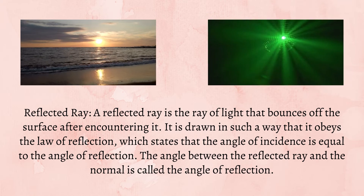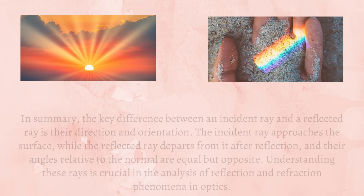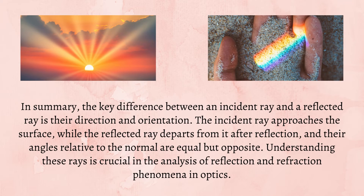In summary, the key difference between an incident ray and a reflected ray is their direction and orientation. The incident ray approaches the surface, while the reflected ray departs from it after reflection, and their angles relative to the normal are equal but opposite. Understanding these rays is crucial in the analysis of reflection and refraction phenomena in optics.